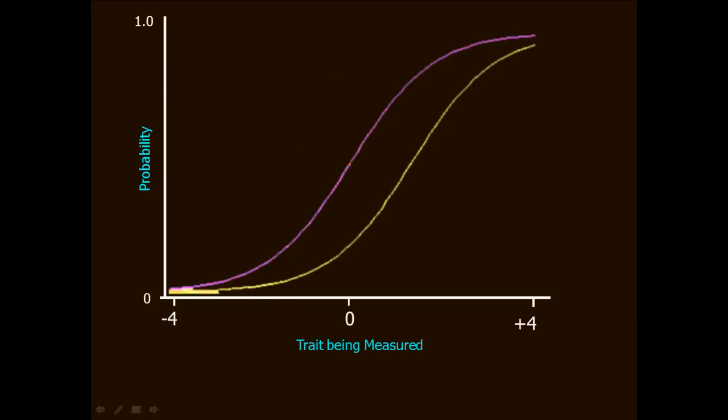Take a look at these two trace lines, each of which represents the probabilities of saying yes to a different item. What do these lines tell you about the probabilities of responding yes to each item? One way to answer this question is to look at where on the continuum the median probability occurs. That is, for each item, at what level of the trait being measured is the probability of a yes response at 0.5, the median probability.